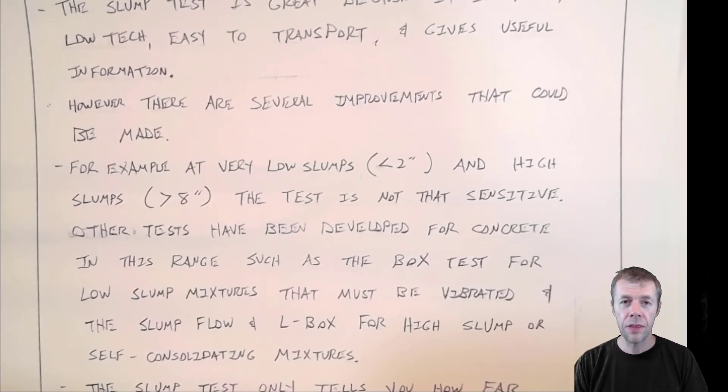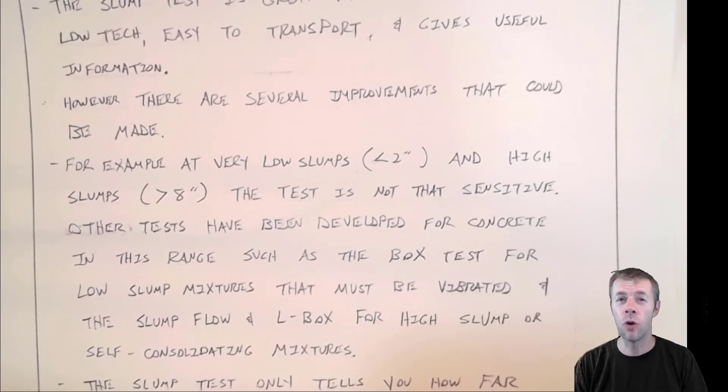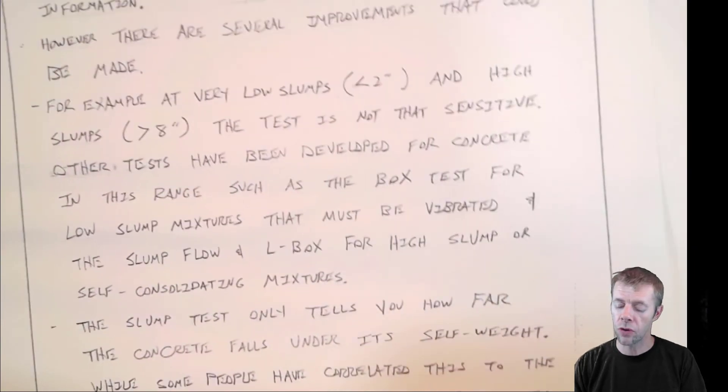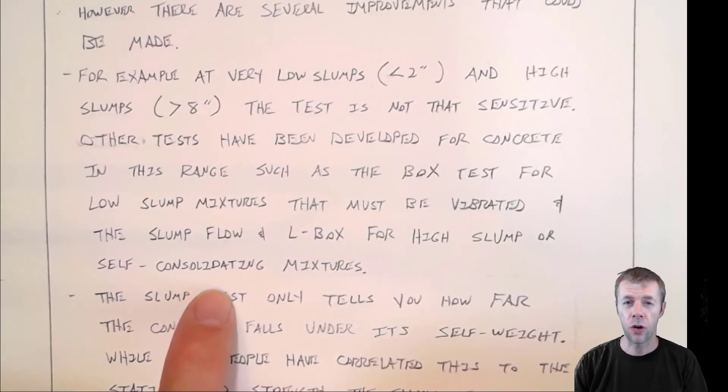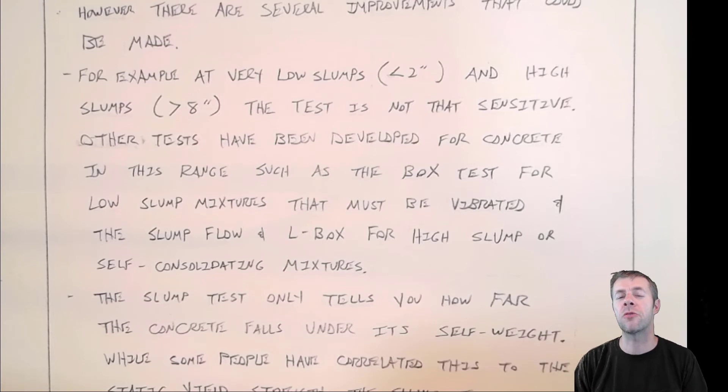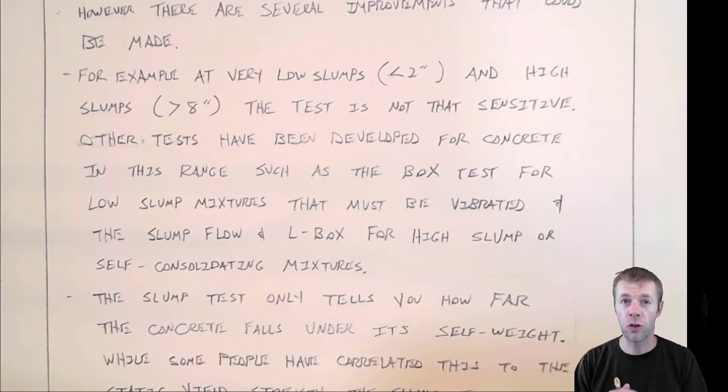And if you have something that's very, very high flow ability, something that's usually called self consolidating concrete, this is concrete that doesn't really have to be vibrated, doesn't have to do much finishing, it just kind of flows like water. Then the slump test isn't the best test. You use something instead called the slump flow, or the L box.